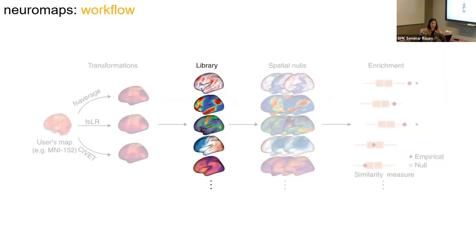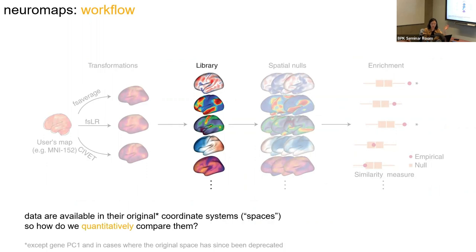When we make the data available, we make it available in the original coordinate space in which it's available. We thought about whether to parcellate it all to one parcellation, or transform it to a bunch of different spaces — but that's redundant and would take tons of space. So we decided to make them available in the original space without tinkering with the data, and then provide tools to transform between spaces or parcellate if needed, because we need them in the same space to quantitatively compare them.